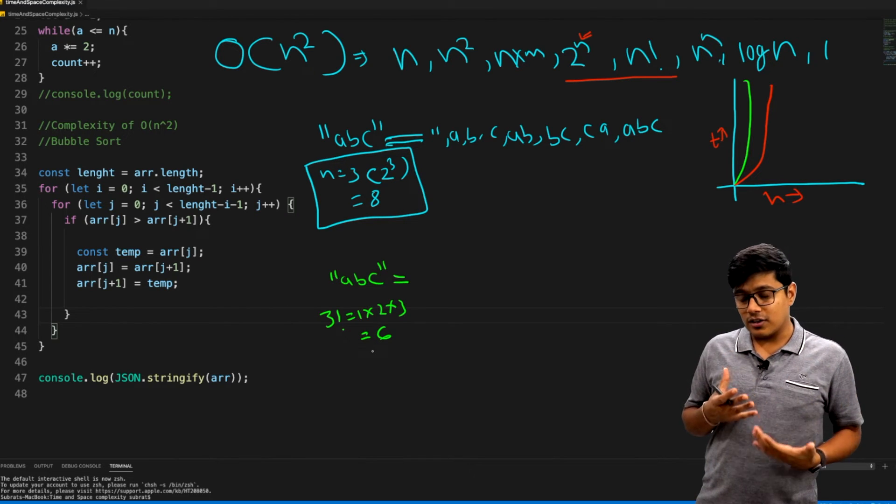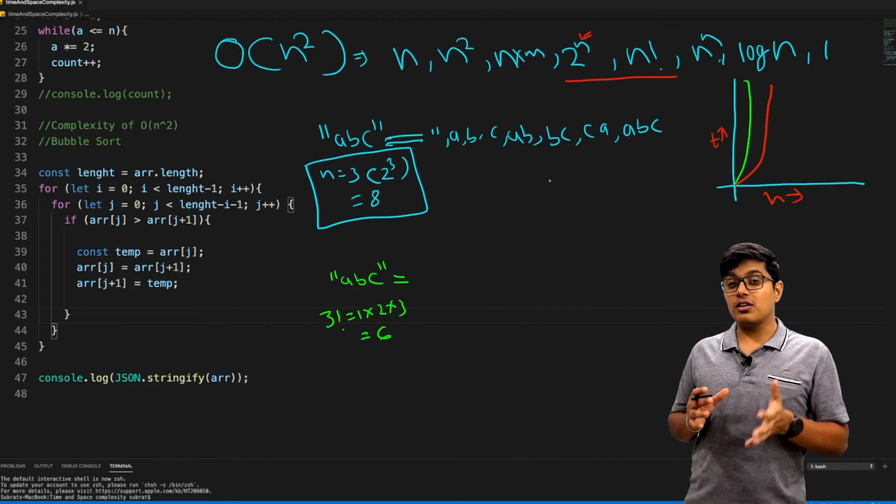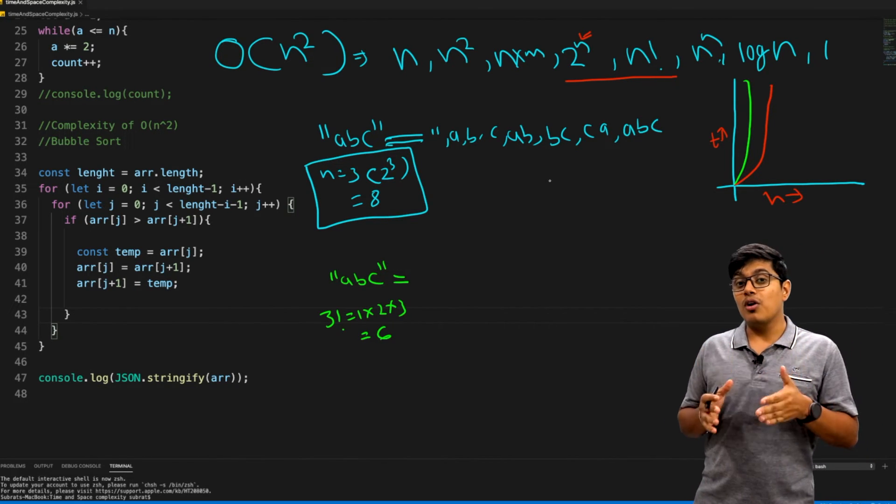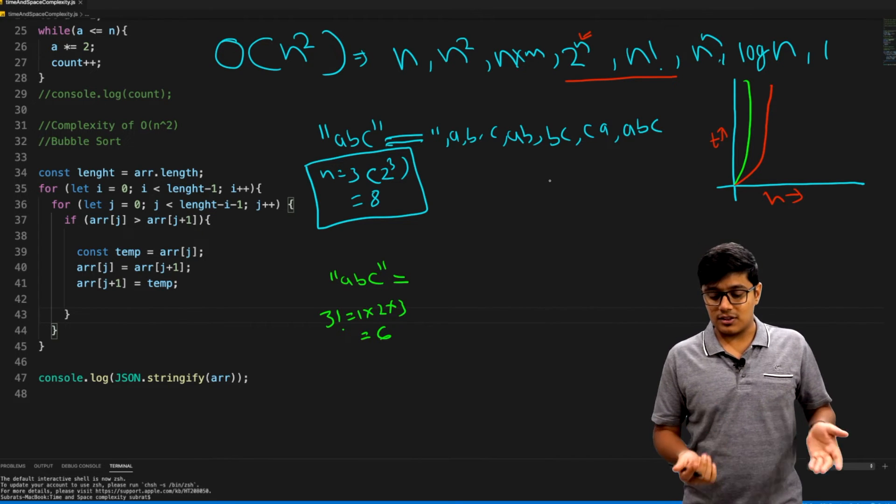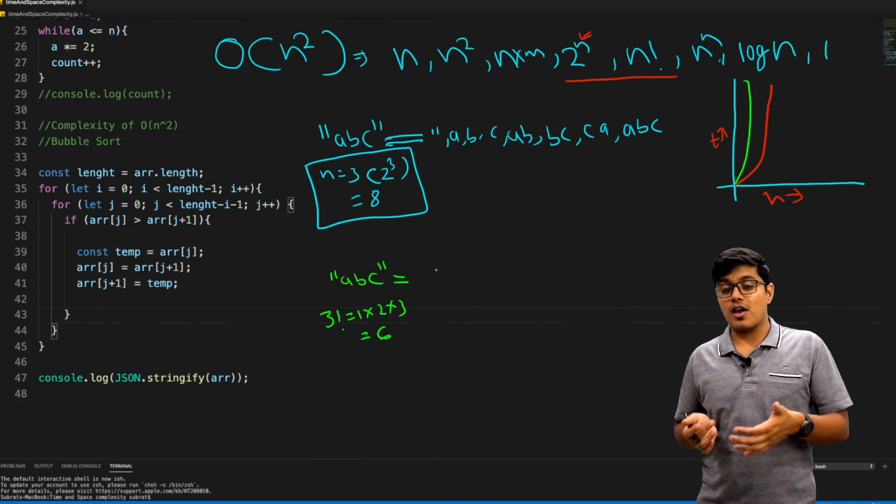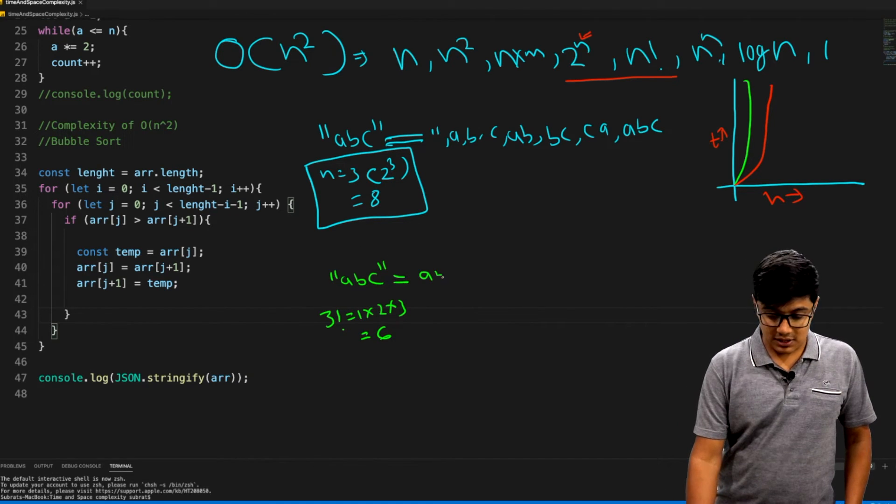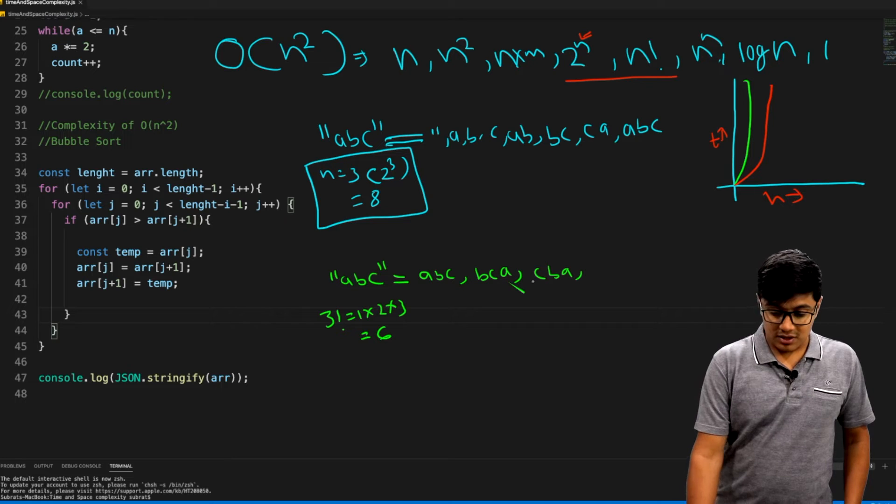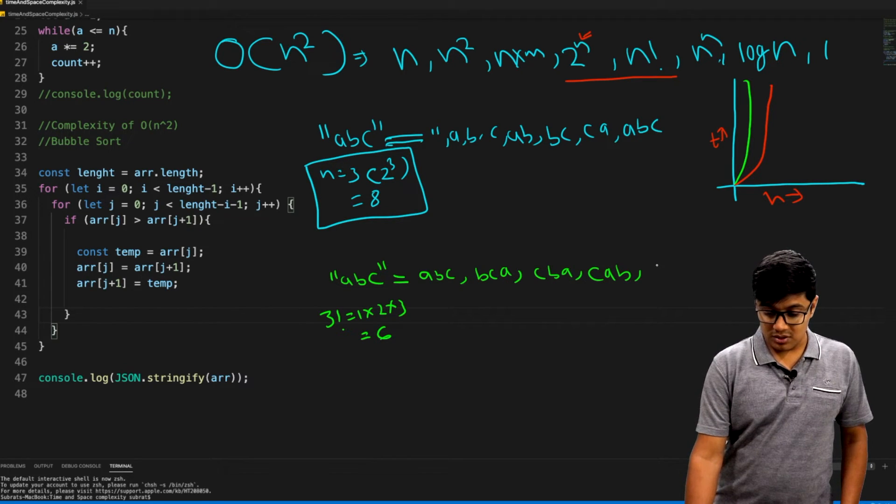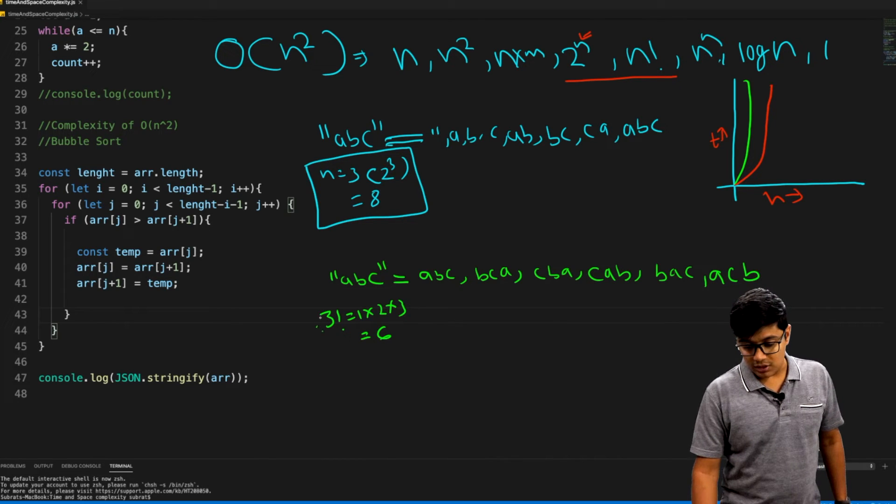You may see this is smaller than 2 to the power n, but the catch here is we are not going to find the complexity for all digits. We'll find the combination of the value only for those lengths. Again, exponential is the combination and factorial is the permutation. If you try to find the factorial of ABC, suppose now if you increase the value to 4, this will be 4 factorial.